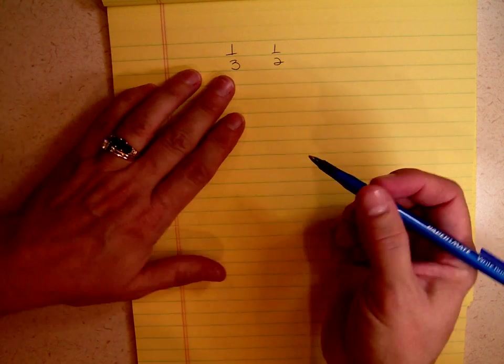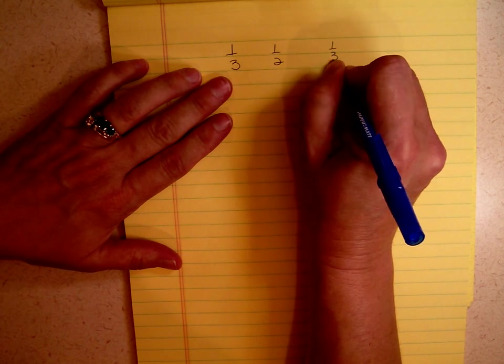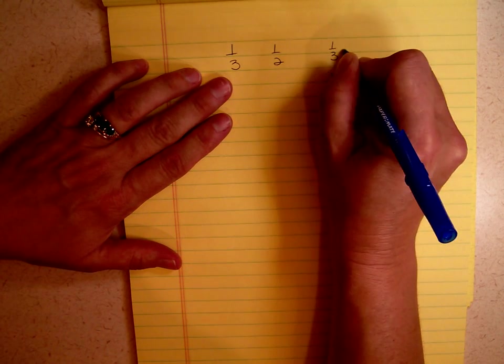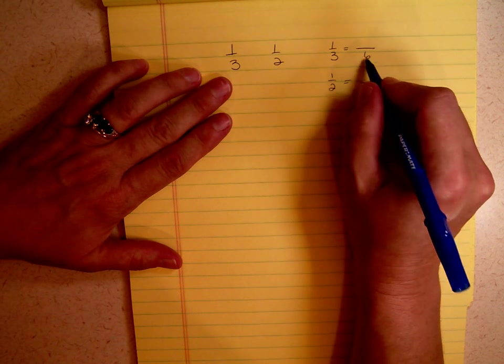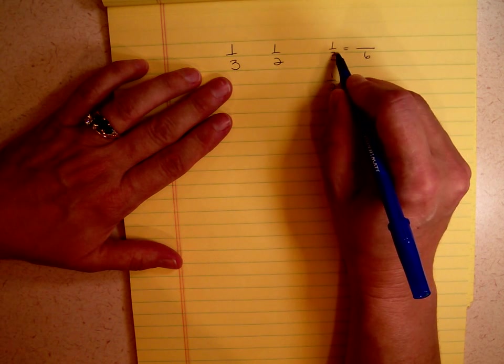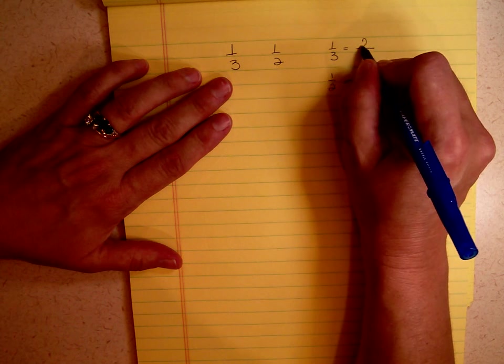6 works. So I have one-third and one-half, and one-third is how many sixths? Well, 3 times 2 gives me 6, so 1 times 2 gives me 2.